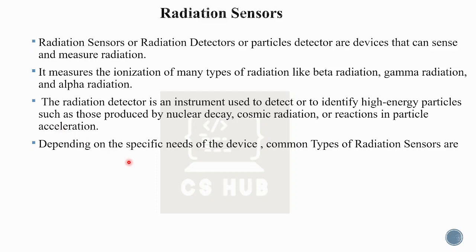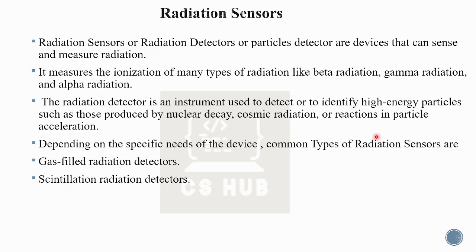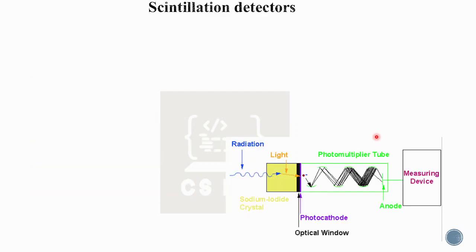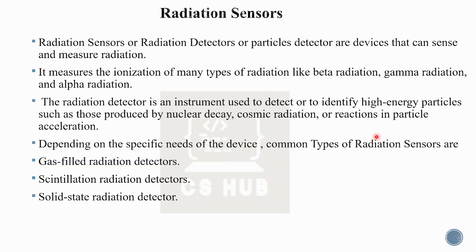Depending on the specific needs of the device, there are common types of radiation sensors used to detect high-speed particles. The first is the gas-filled radiation detector. The second is the scintillation radiation detector. The third is the solid-state radiation detector.